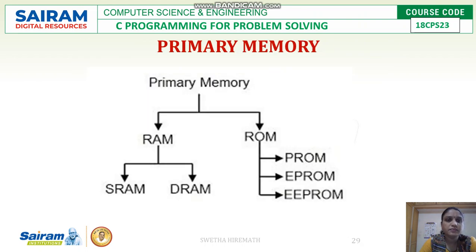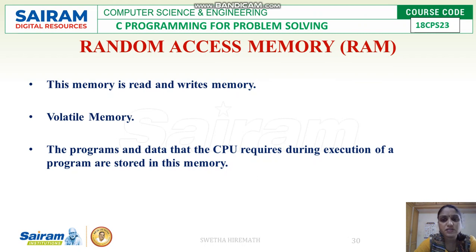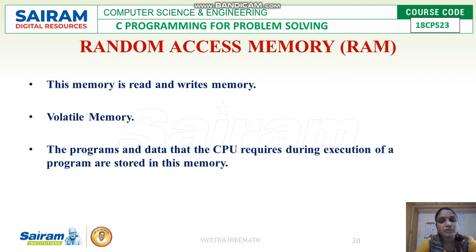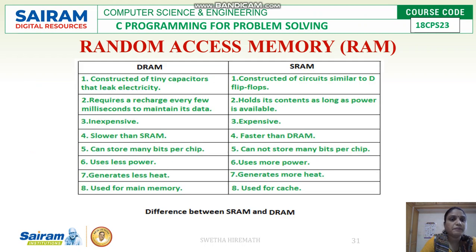RAM — random access memory — is temporary memory that supports both read and write operations. It is volatile memory, meaning whenever power goes off the stored contents are lost. The programs and data that the CPU requires during execution of a program are stored in RAM, only temporarily during the execution phase.